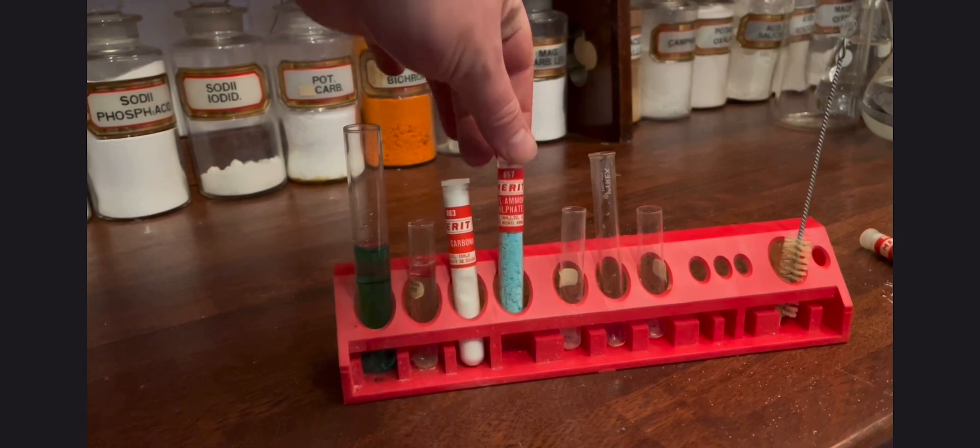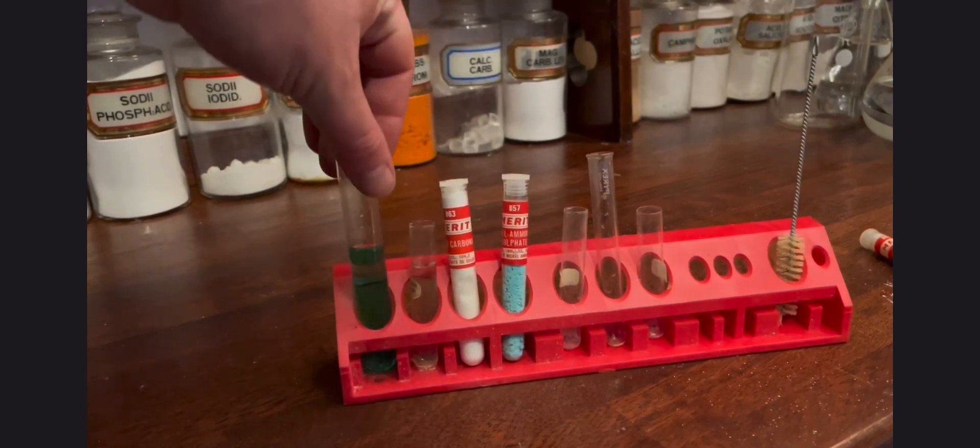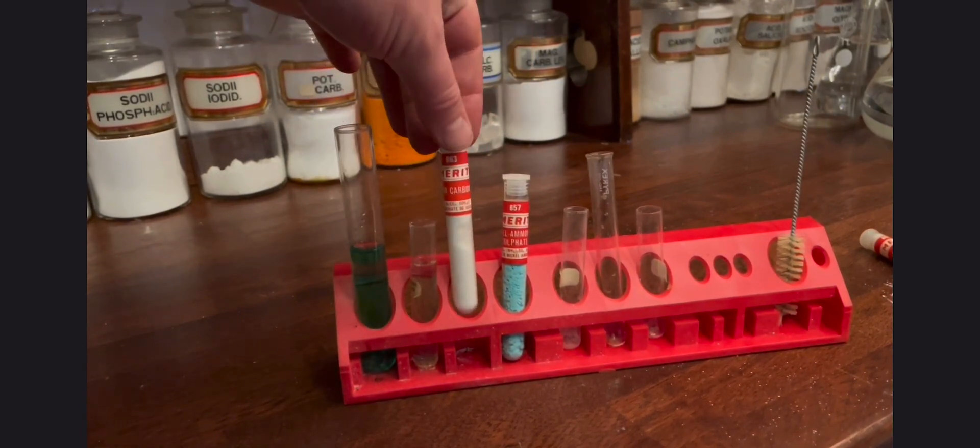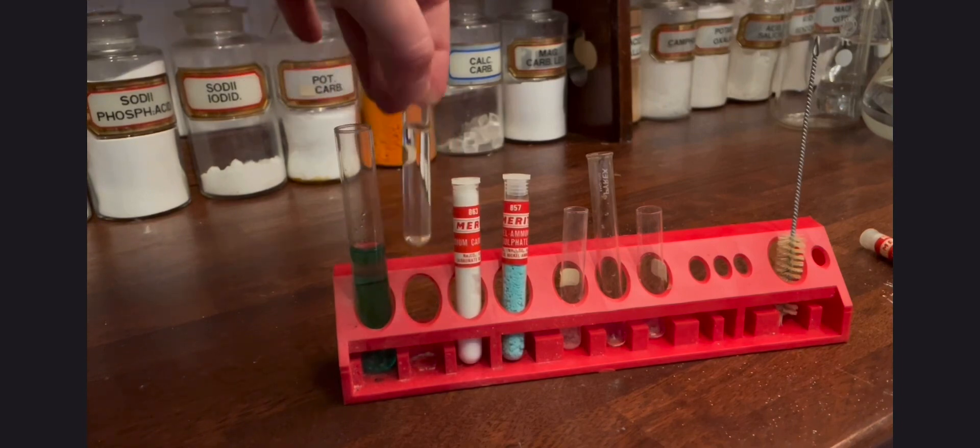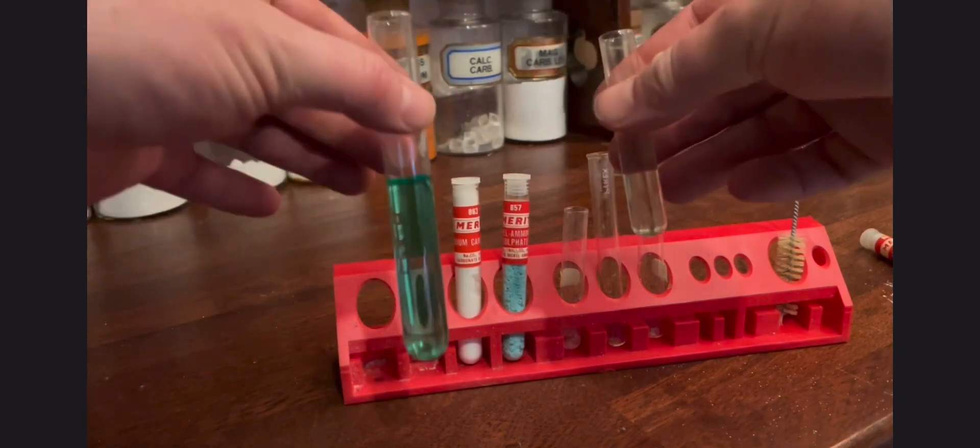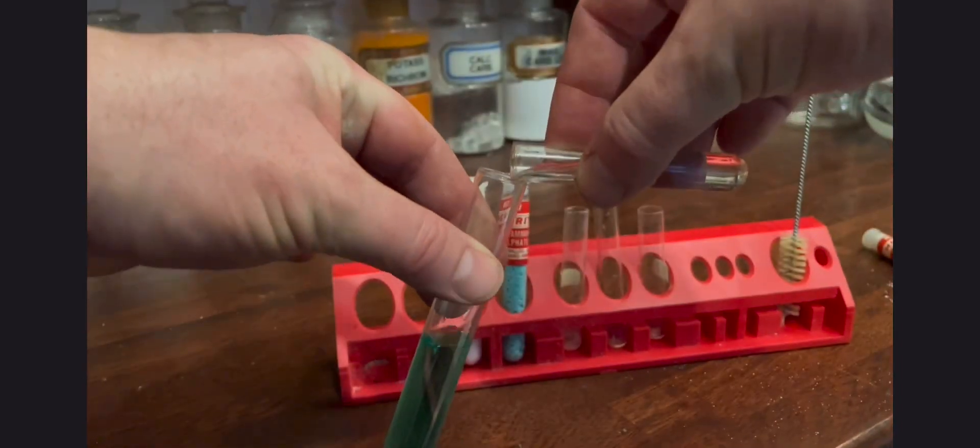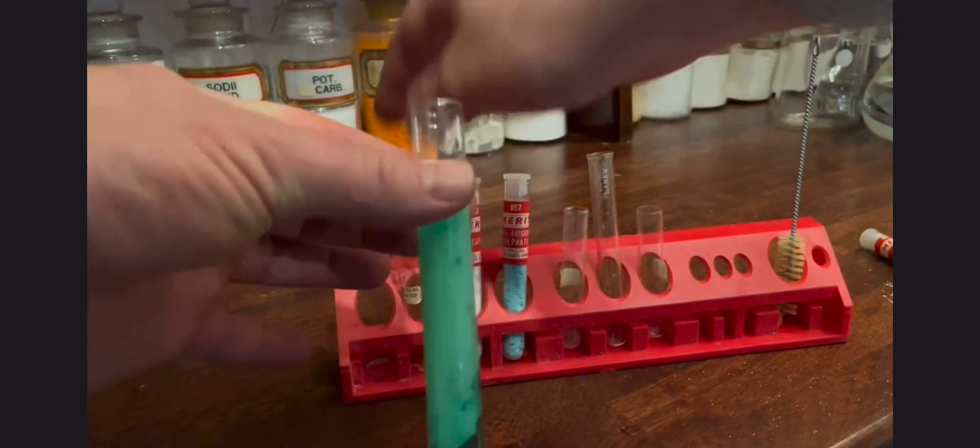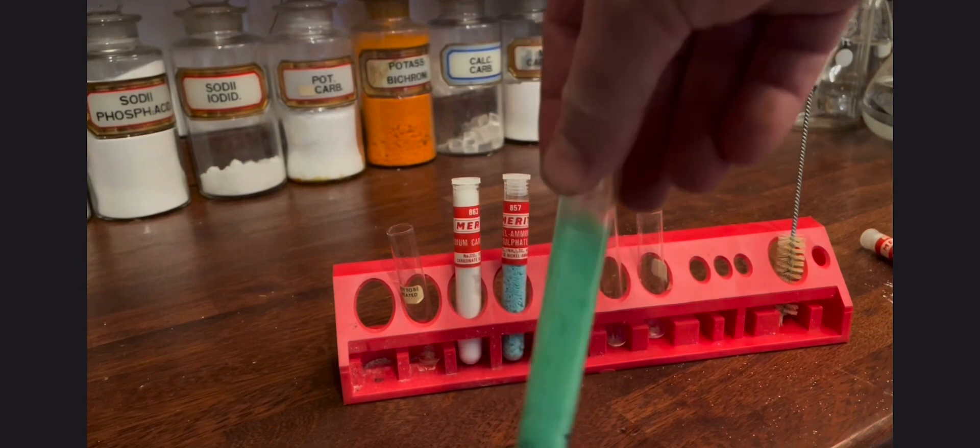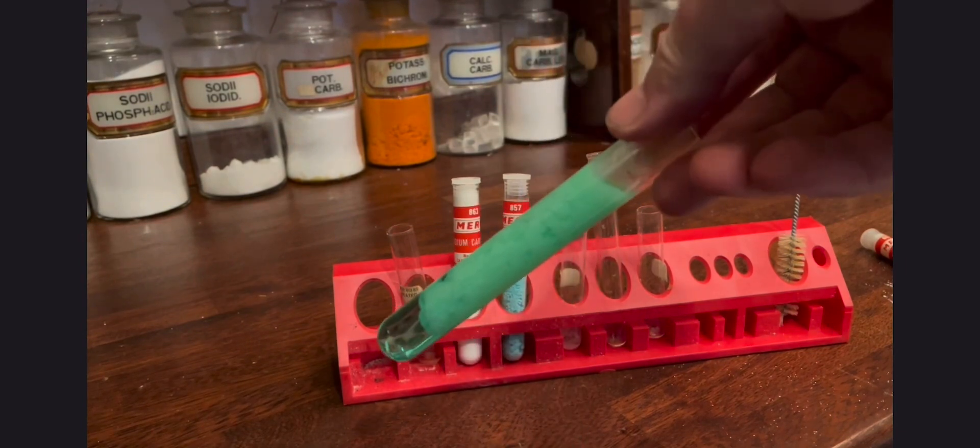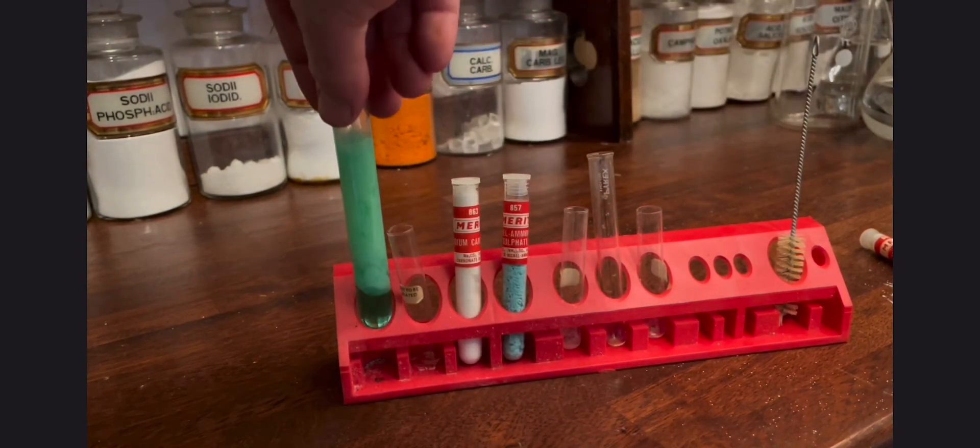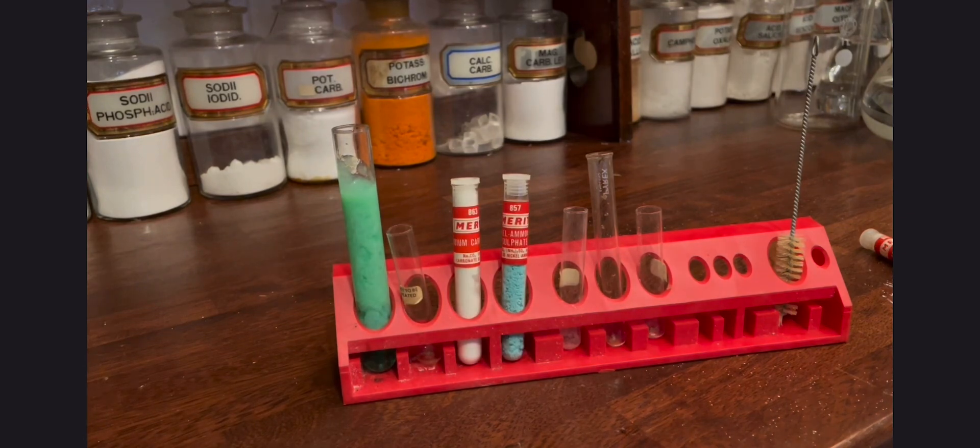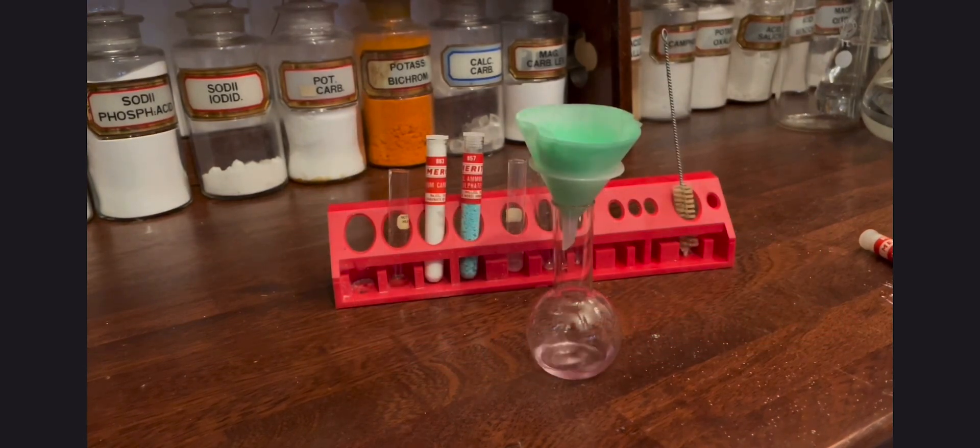First of all we've got our nickel sulfate and our solution of sodium carbonate. We're going to mix them together and you should see a very curly sort of greenish gelatinous precipitate forming. There we go, there's our nickel carbonate.